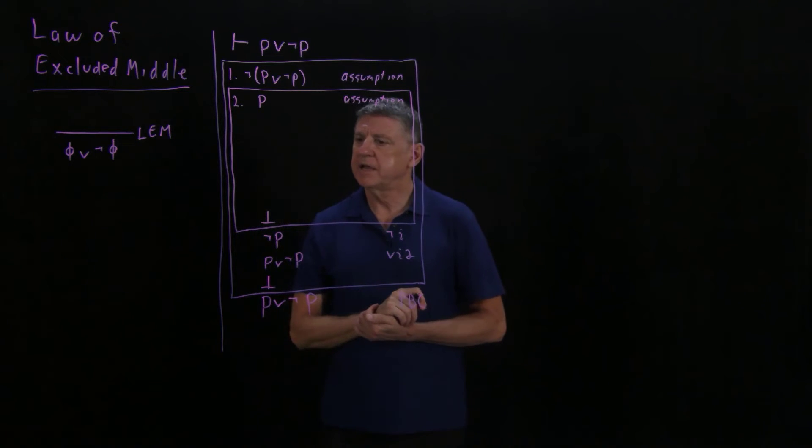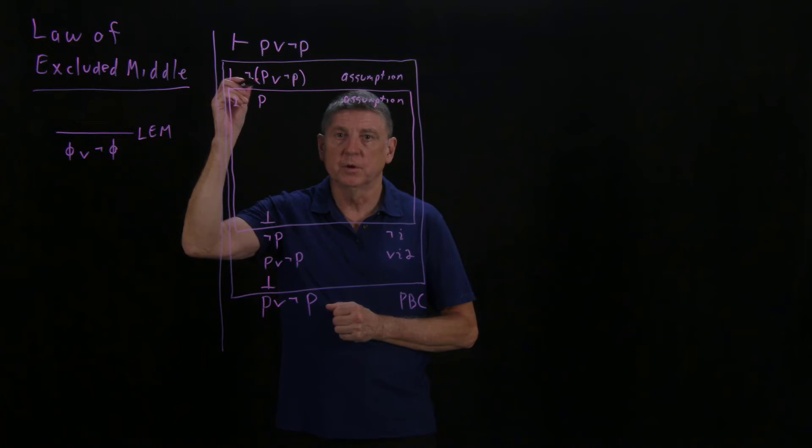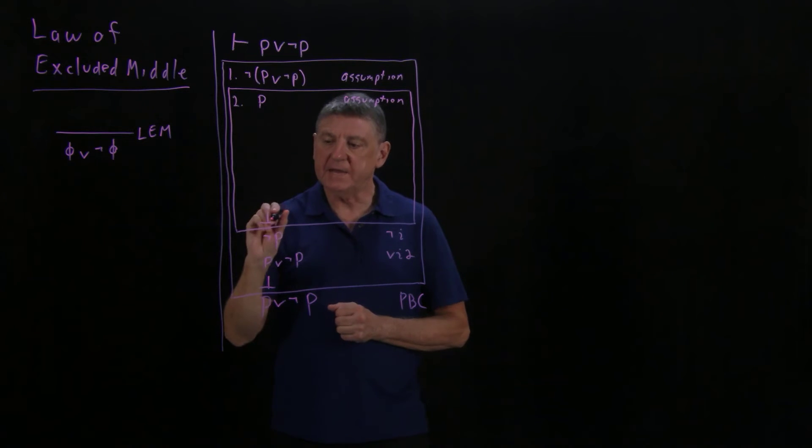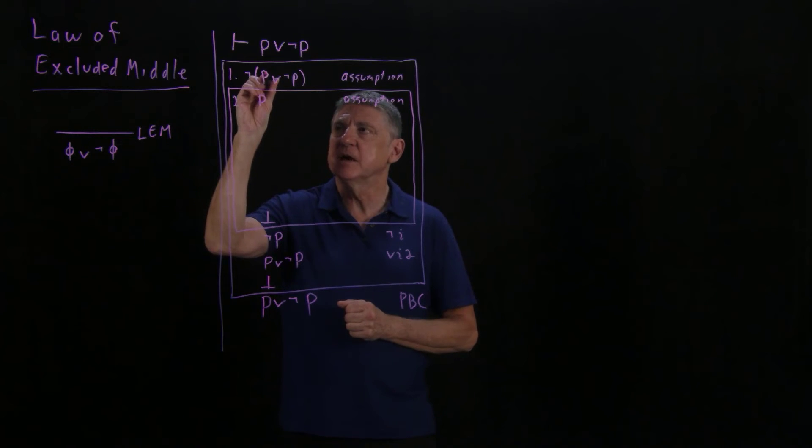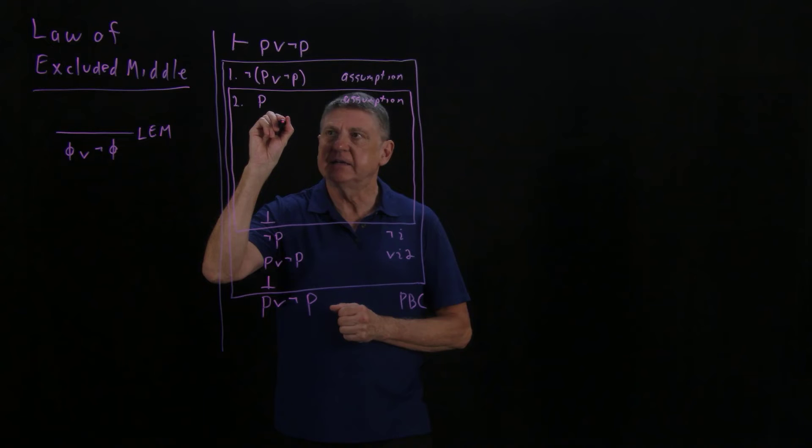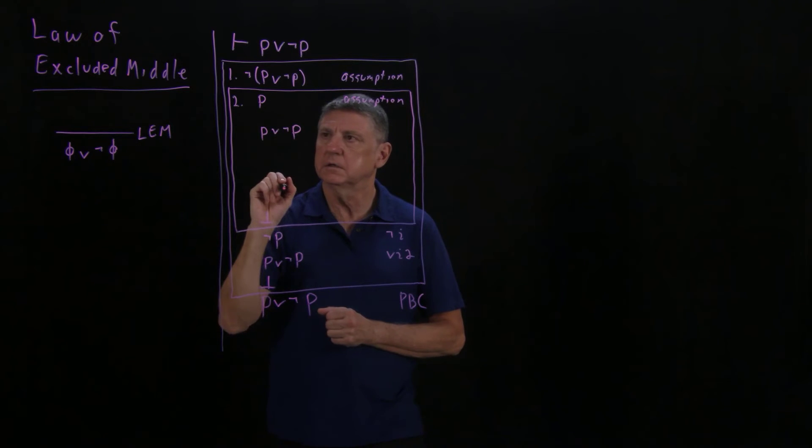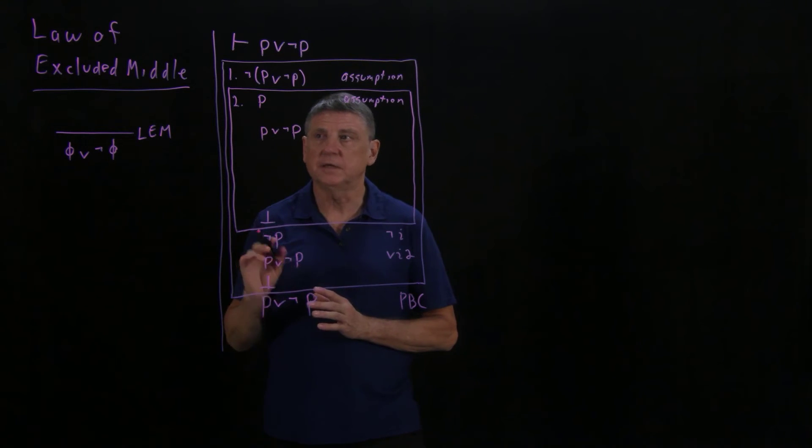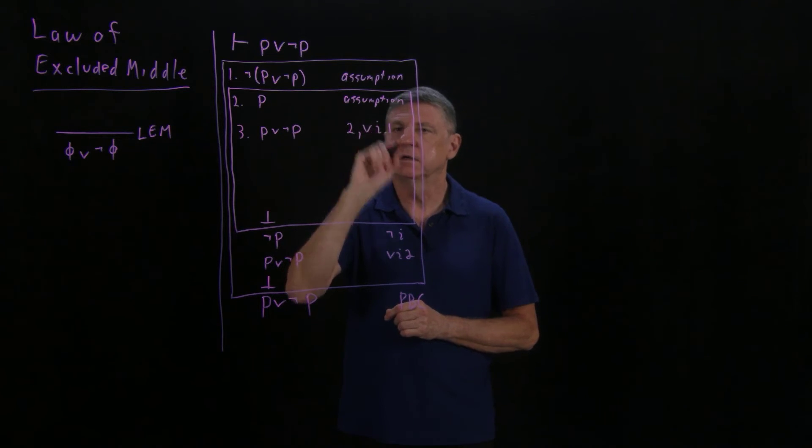And I say, given my new assumption and all preceding lines of the proof that are within scope, what can I do? And here I see I have p, and then what I'm aiming at is the bottom symbol, is a contradiction. And I see, oh, I could arrive at this unnegated formula by taking p and using disjunction-introduction with another formula. So if I wrote p or not p, then that would be the unnegated form of this. I would have a contradiction, and I would be complete. And yes, I can write that because that would follow from line 2 using disjunction-introduction type 1.